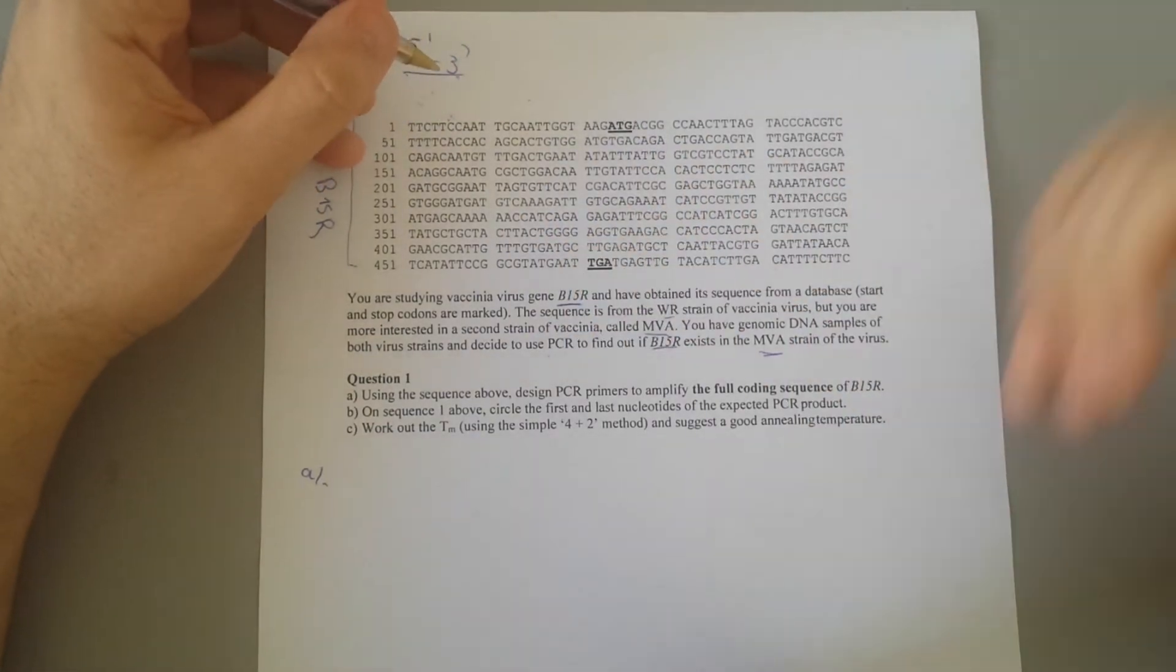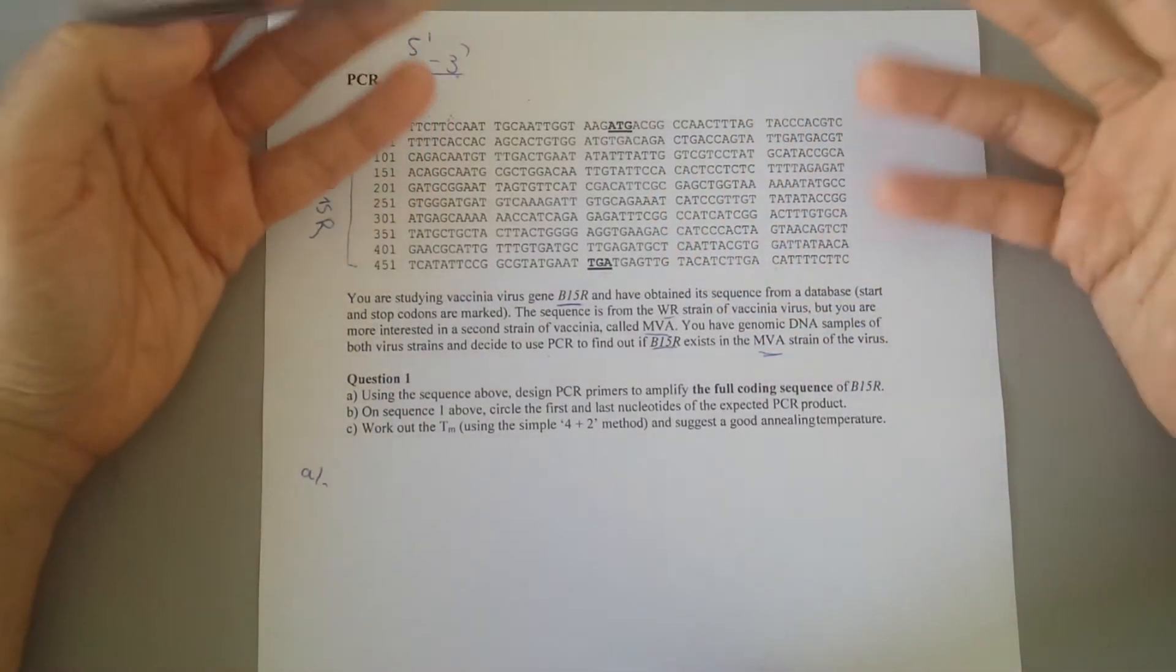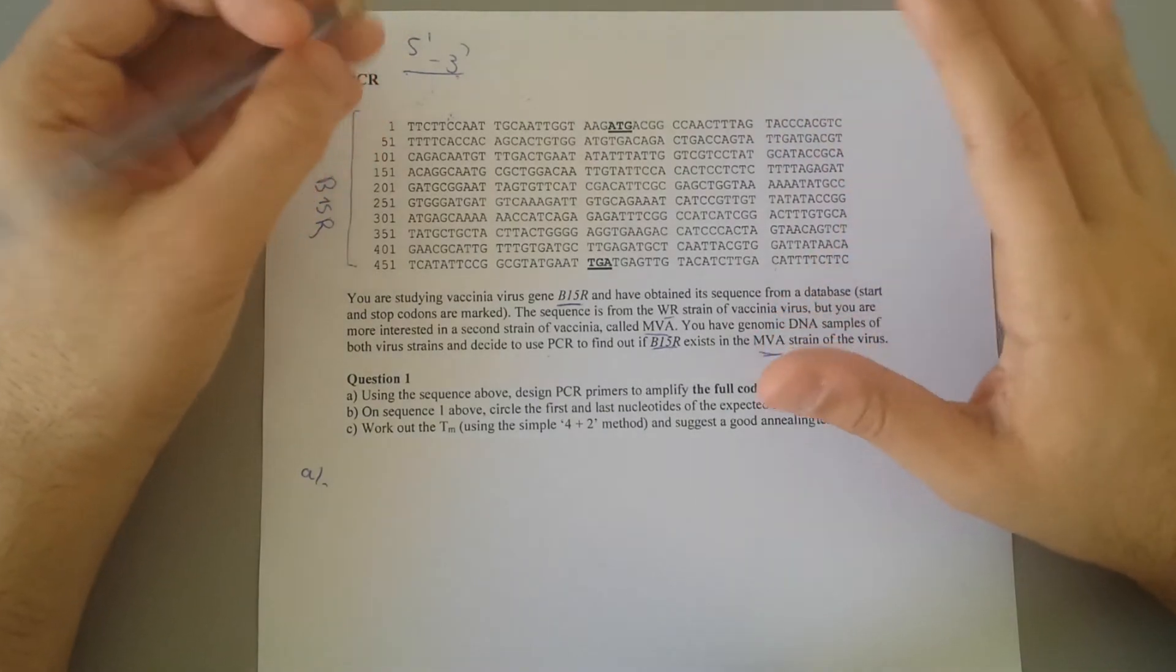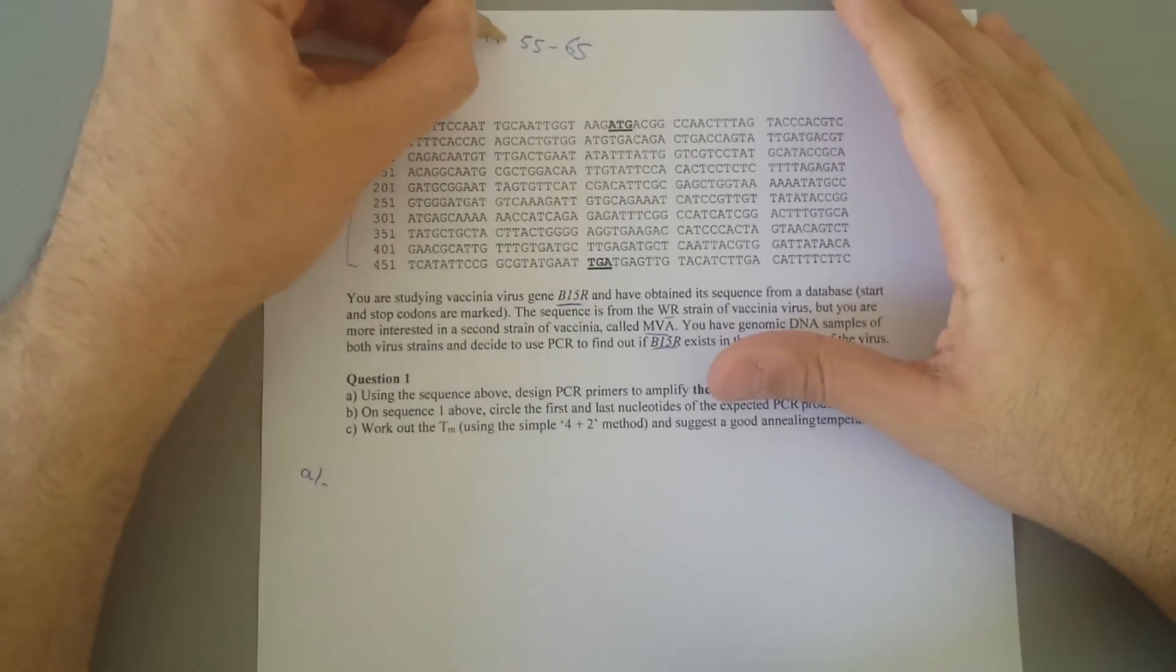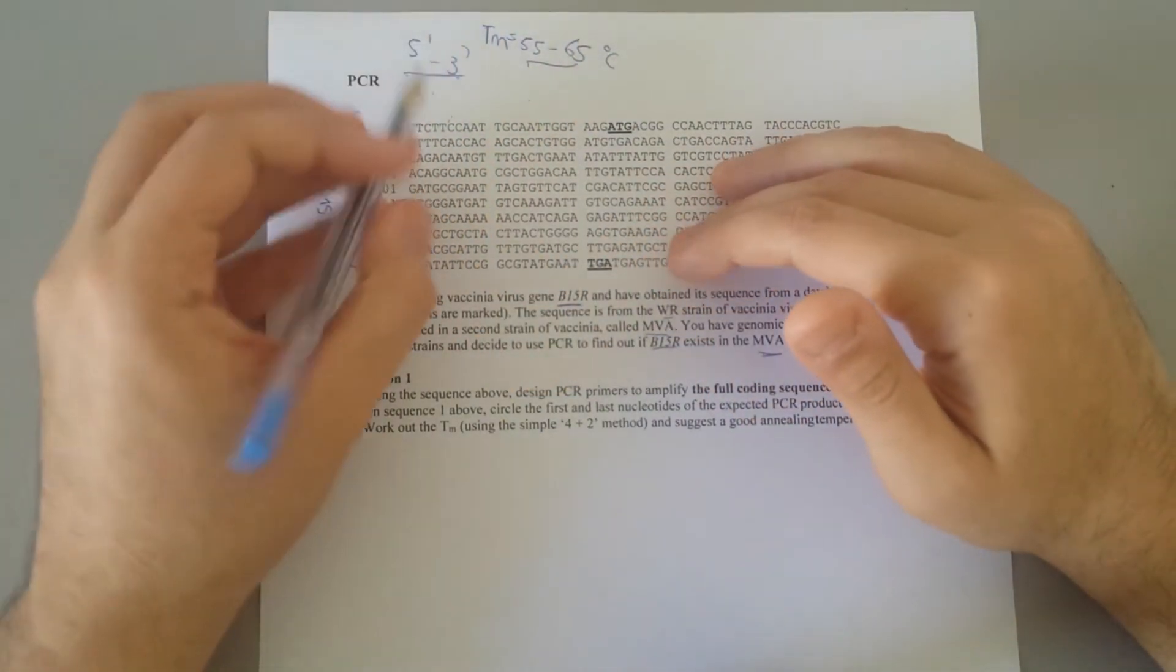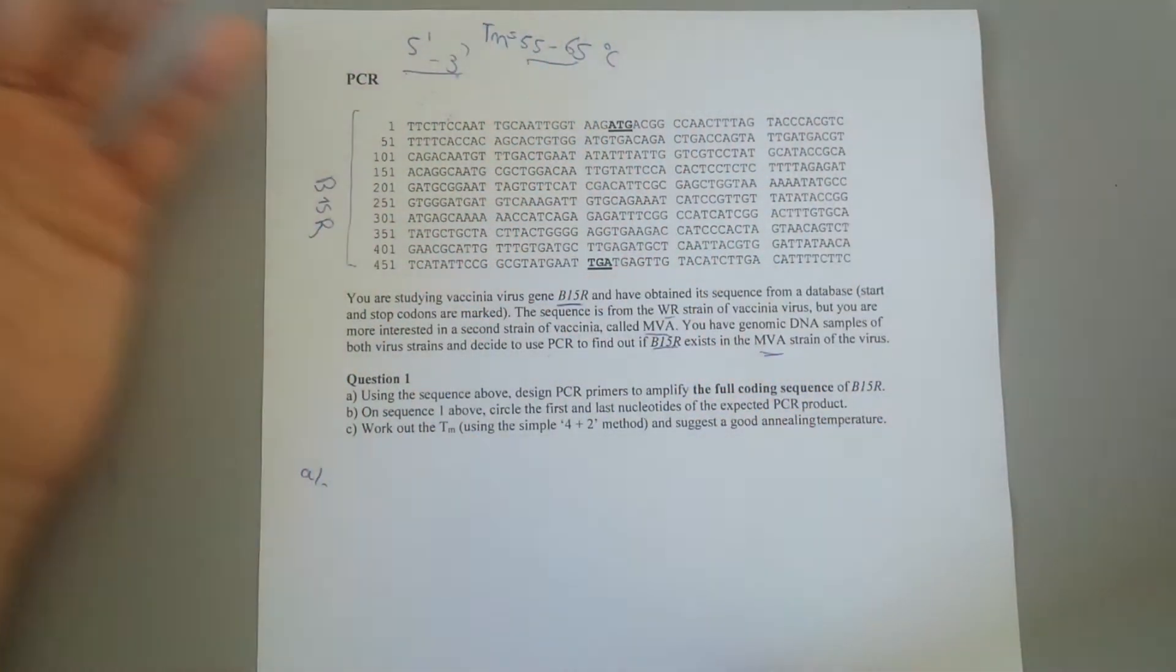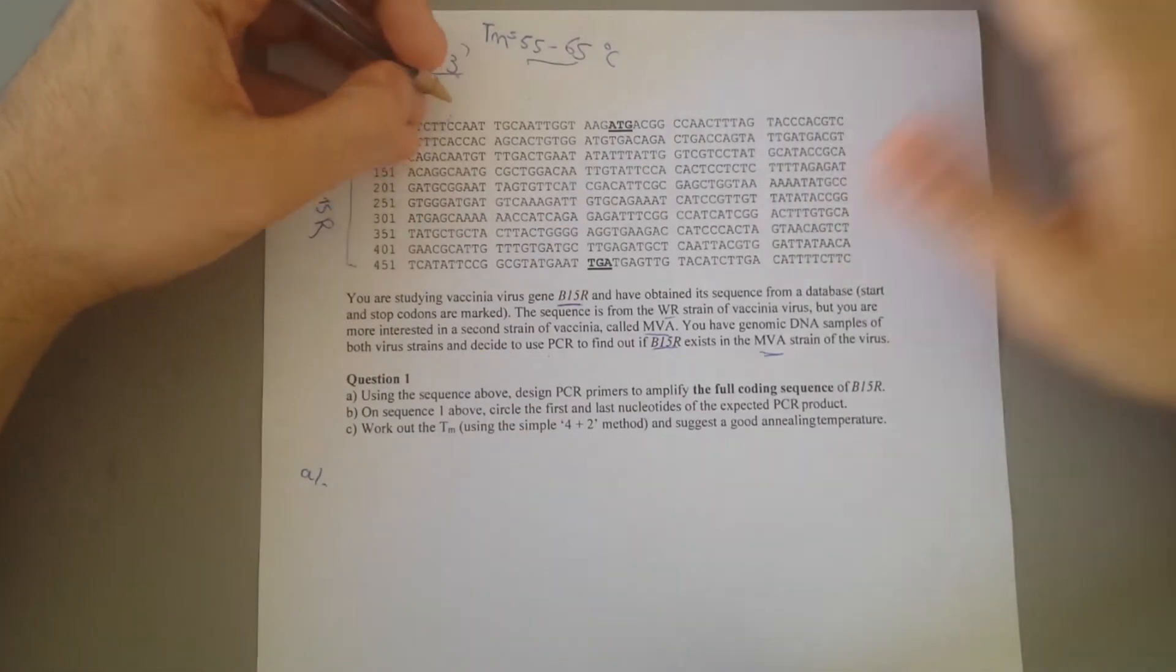It's very easy. You want to make sure that it is in the 5 prime end to 3 prime end, both forward and reverse strand. So it means you can literally pick anything between around 20 nucleotides or 21, 22, doesn't really matter, as long as you keep the temperature to be between 55 to 65. So Tm must be between 55 to 65 Celsius, both reverse and forward, to give us the best result on PCR.